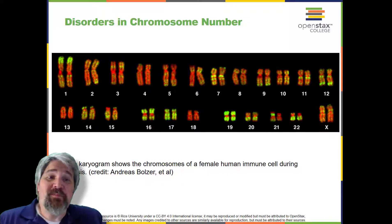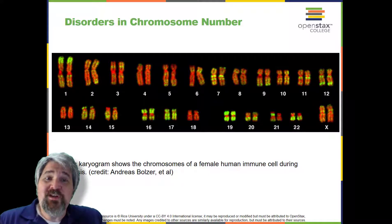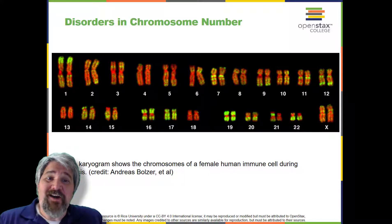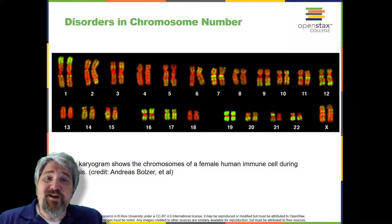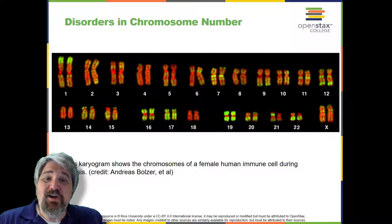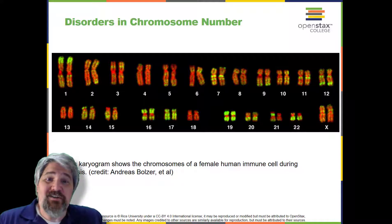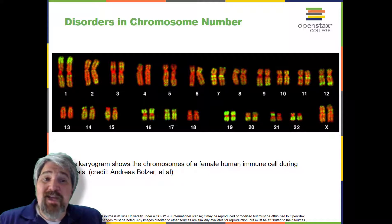Examples include Down syndrome, which is identified by a third copy of chromosome 21, and Turner syndrome, which is characterized by the presence of only one X chromosome in women instead of two. Geneticists can also identify large deletions or insertions of DNA — for instance, Jacobson syndrome, which involves distinctive facial features as well as heart and bleeding defects, is identified by a deletion on chromosome 11. The karyotype can also pinpoint translocations, which occur when a segment of genetic material breaks from one chromosome and reattaches to another chromosome or to a different part of the same chromosome. Translocations are implicated in certain cancers, including chronic myelogenous leukemia.